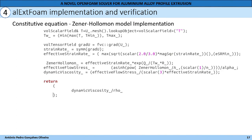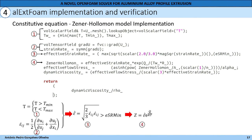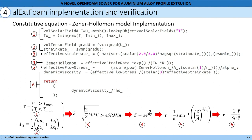Then we proceed to the Zener-Hollomon implementation, where first we add the temperature from the solver, putting a maximum and minimum limiting variable in order to limit the solution between common values. Then we calculate the strain rate, the effective strain rate — which must be higher than a minimum value — the Zener-Hollomon effective flow stress, and kinematic viscosity. In kinematic viscosity, effective strain rate is in the denominator, and for that reason can have a division by zero, which is why we have the effective strain rate limiting value.